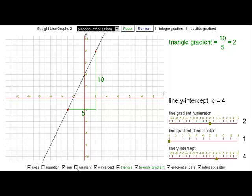This has a gradient of 2. Let's just check that. Yes, the line gradient is 2. And that tells us straight away that we can write down the equation of the line as y equals 2, which is the gradient, times x plus 4, which is the y-intercept.